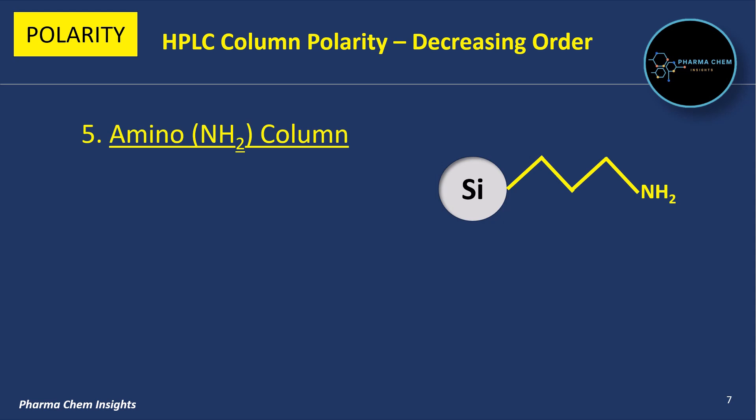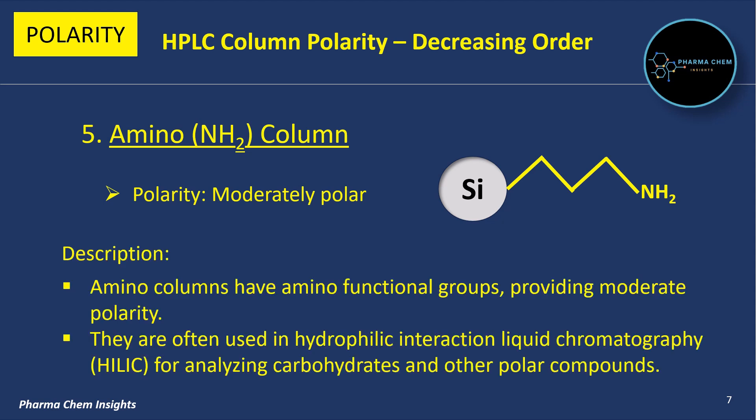Fifth is the Amino column. Its polarity is moderately polar. Amino columns have amino functional groups providing moderate polarity. They are often used in hydrophilic interaction liquid chromatography (HILIC) for analyzing carbohydrates and other polar compounds.